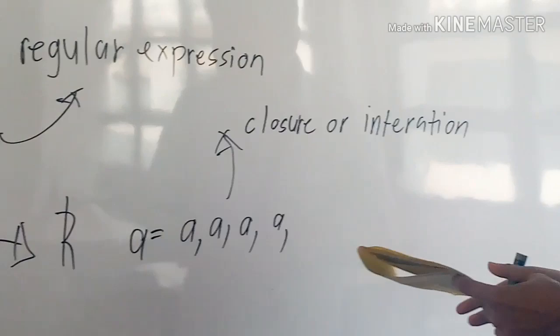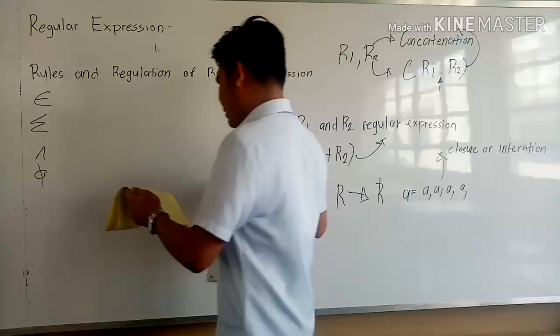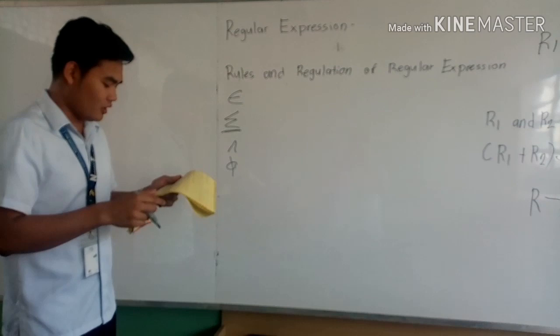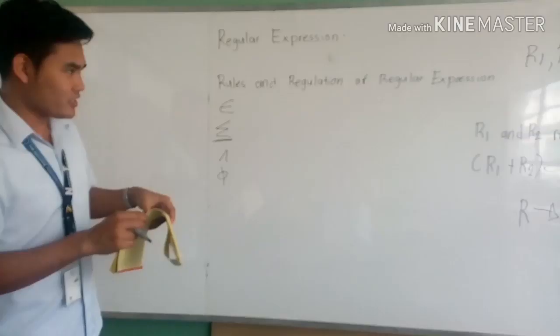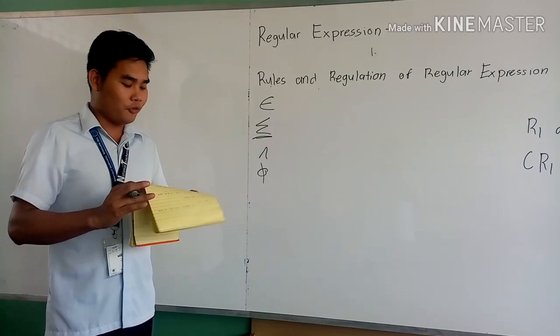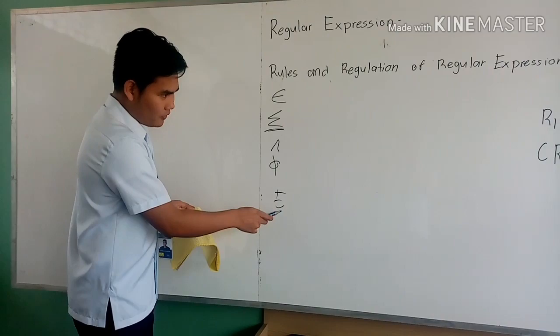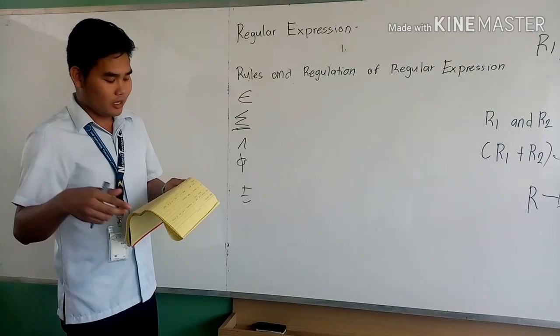The last one: the regular expressions over the sigma symbol are precisely those obtained recursively by the application of the above rules once or several times. As I mentioned, the four rules and regulations can be used as the fifth — meaning in the fifth rule, we can use the four rules and regulations.